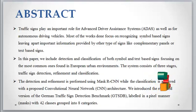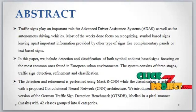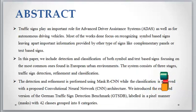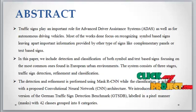The detection and classification are performed using Mask R-CNN, which is a Convolutional Neural Network. We introduce an extended version of the German Traffic Sign Detection Benchmark (GTSDB), our dataset, labeled in a fixed manner with 42 classes grouped into 8 categories.